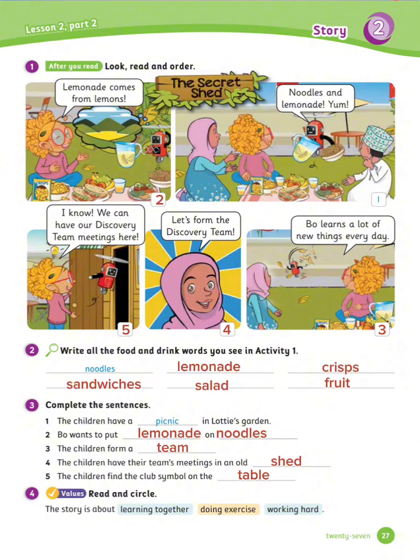Number 3: The children form a team. Number 4: The children have their team's meeting in an old shed. Number 5: The children find the club symbol on the table.